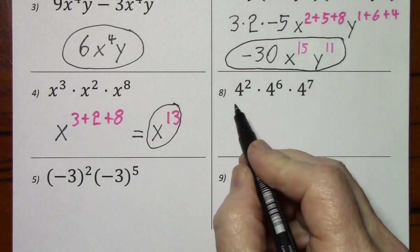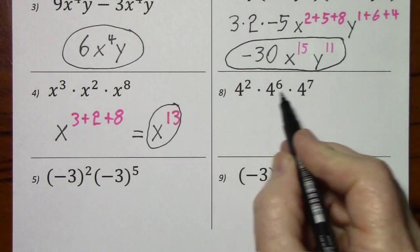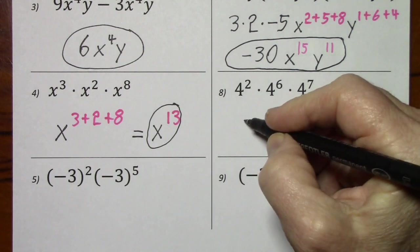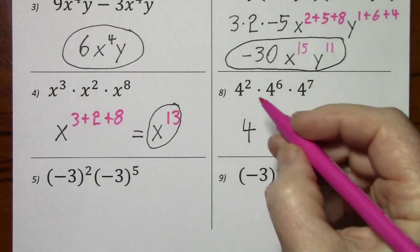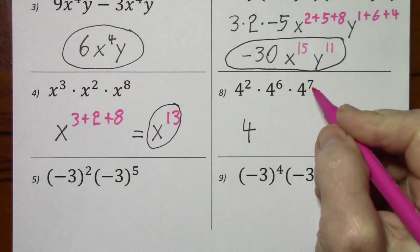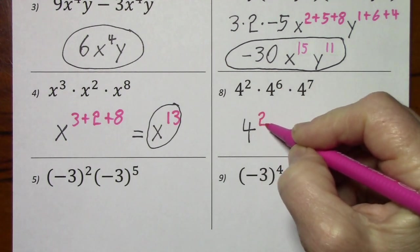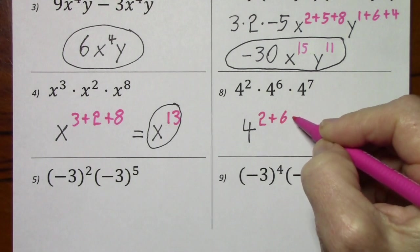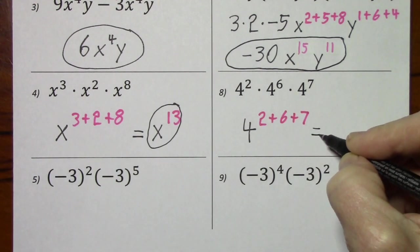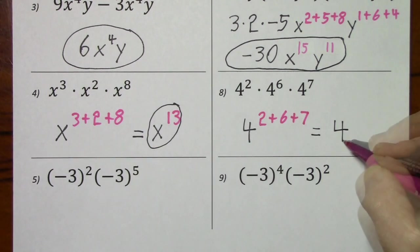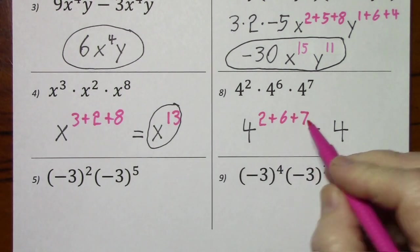Now again with 8, the bases are the same. We can just add exponents. So this is 4 to the 2 plus 6 plus 7, which is 4 to the 15.